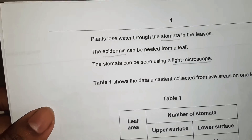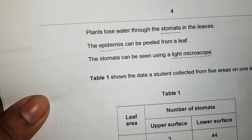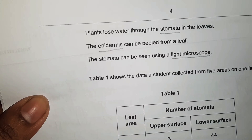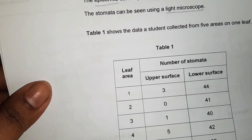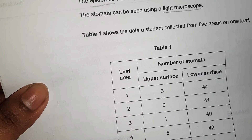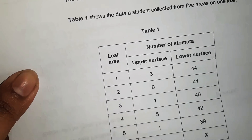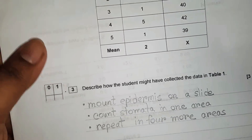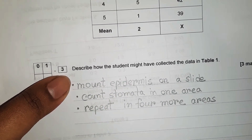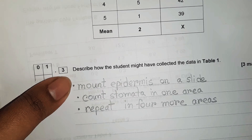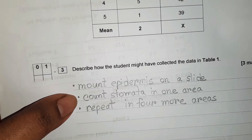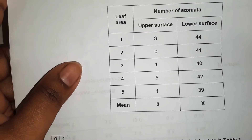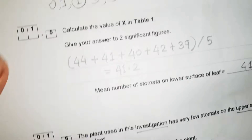Plants lose water through the stomata in the leaves. The epidermis can be peeled from a leaf and the stomata can be seen using a light microscope. Table one shows the data a student collected from five areas on one leaf — upper surface and lower surface. The question asks: describe how the student might have collected that data. Answer: mount epidermis on a slide and count stomata in one area, then repeat in four more areas.